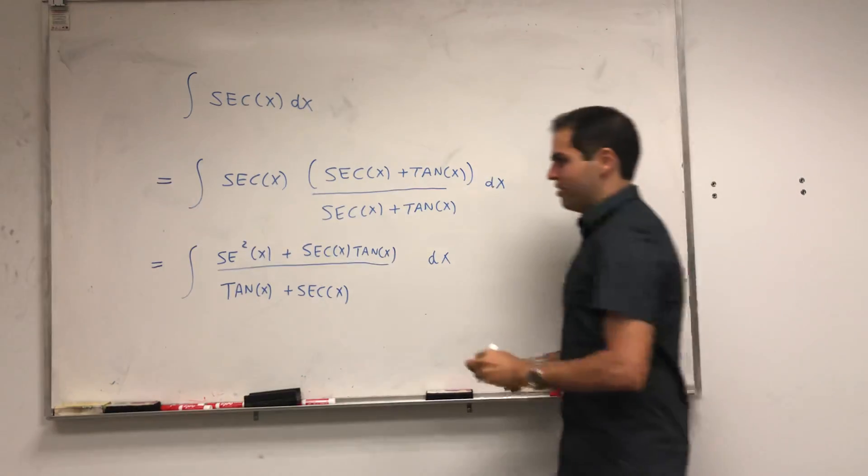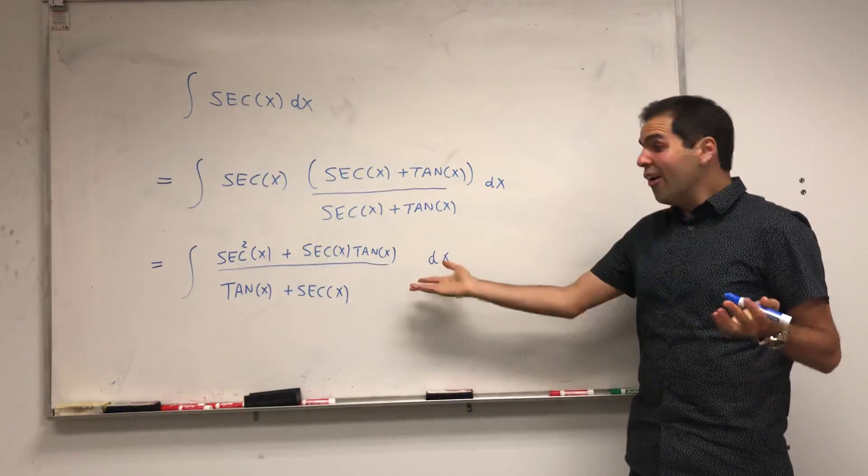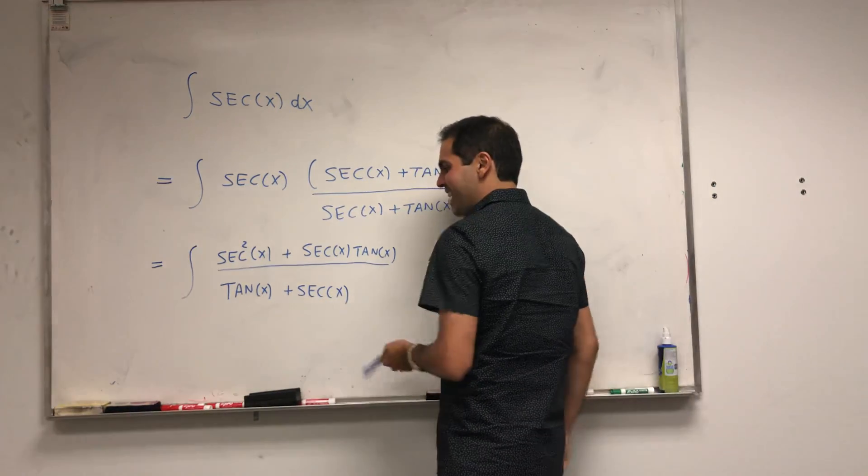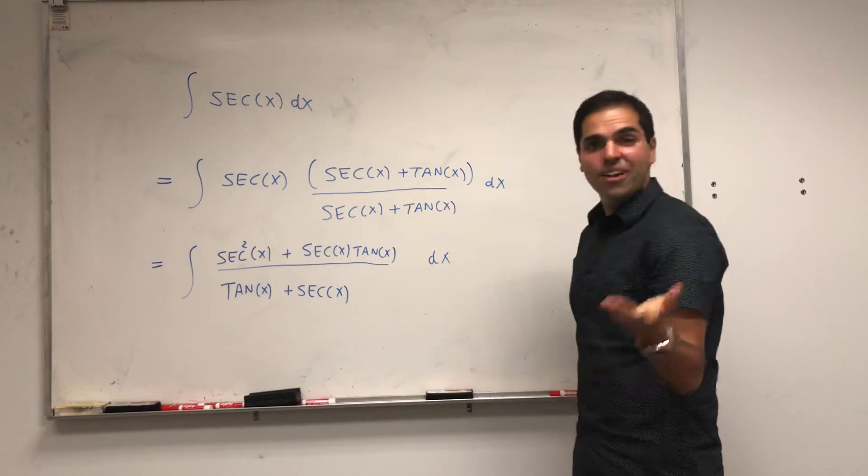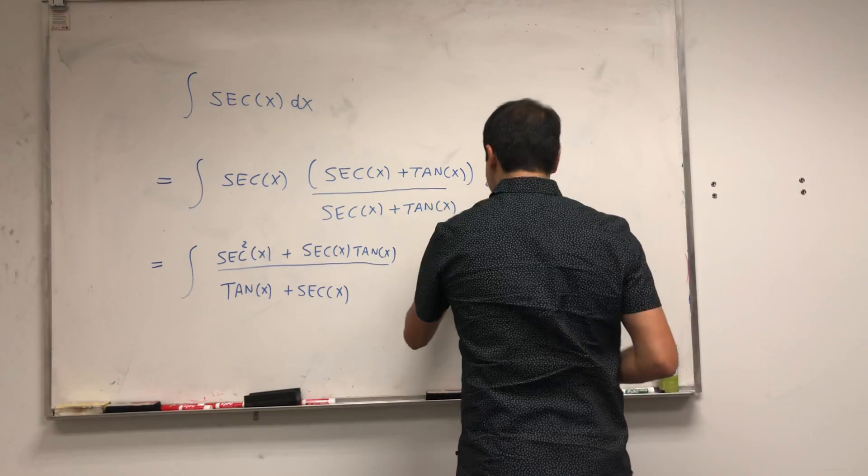Oh, I forgot a dx. And now notice something that's really the coolest thing on this integral. If you differentiate tangent plus secant, you in fact get secant squared plus secant tangent, which calls for a substitution party.